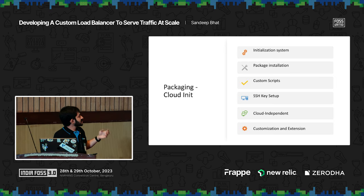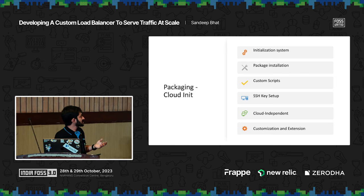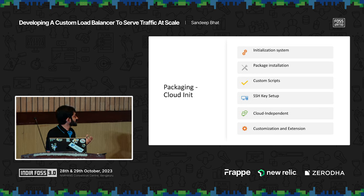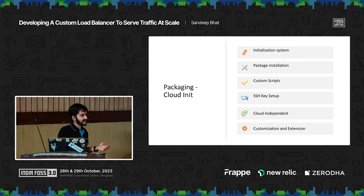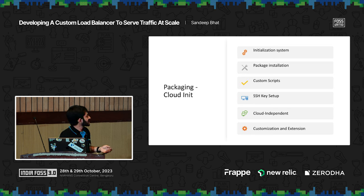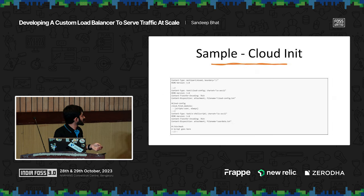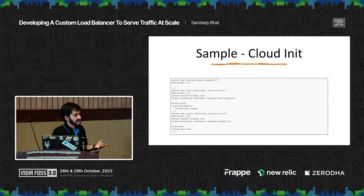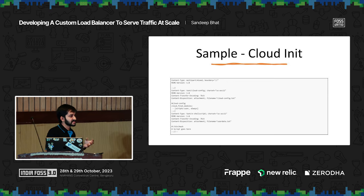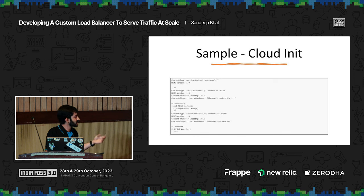Cloud-init is an initialization and package installation system with a lot of features. The one we are most interested in is custom scripts. Using cloud-init, you can write a custom script that downloads Envoy and our control plane from remote storage like S3. The beauty of cloud-init is that you can configure it to run each time the machine boots or only once. If configured to run each time, updating your load balancer remotely is as simple as rebooting your server — it triggers the script again and fetches the latest version.